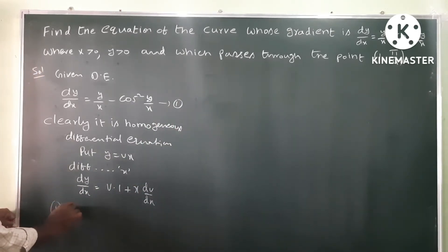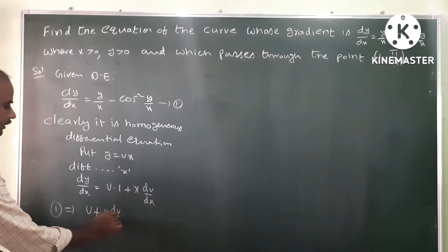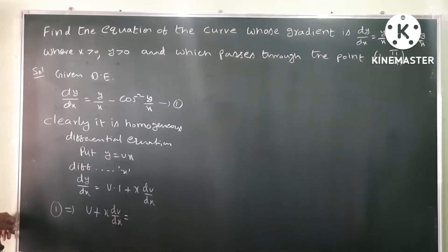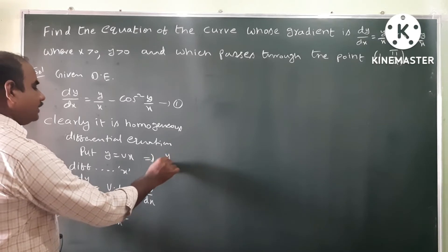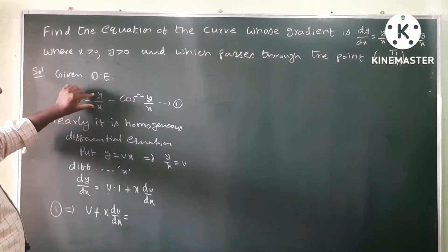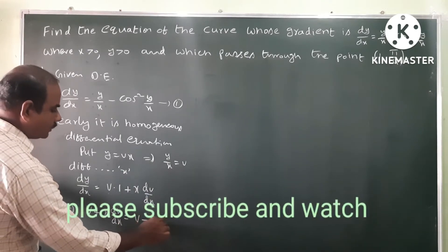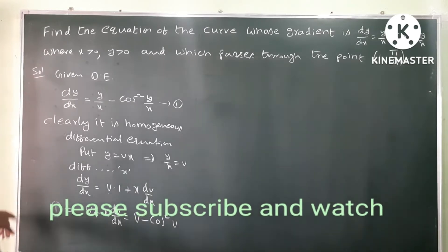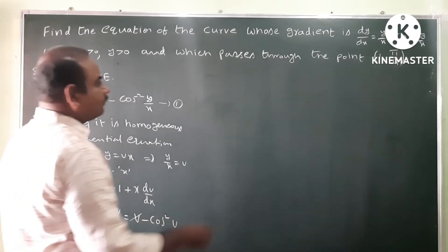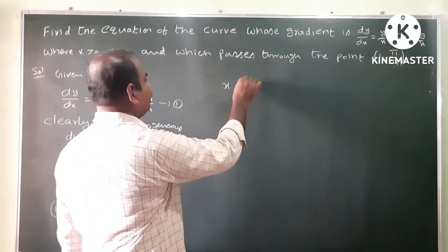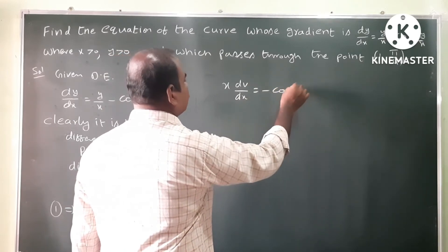Substituting into equation 1: v plus x dv by dx equals y by x minus cos squared (y/x). Since y by x equals v, the v terms cancel, and we are left with x dv by dx equals minus cos squared v.